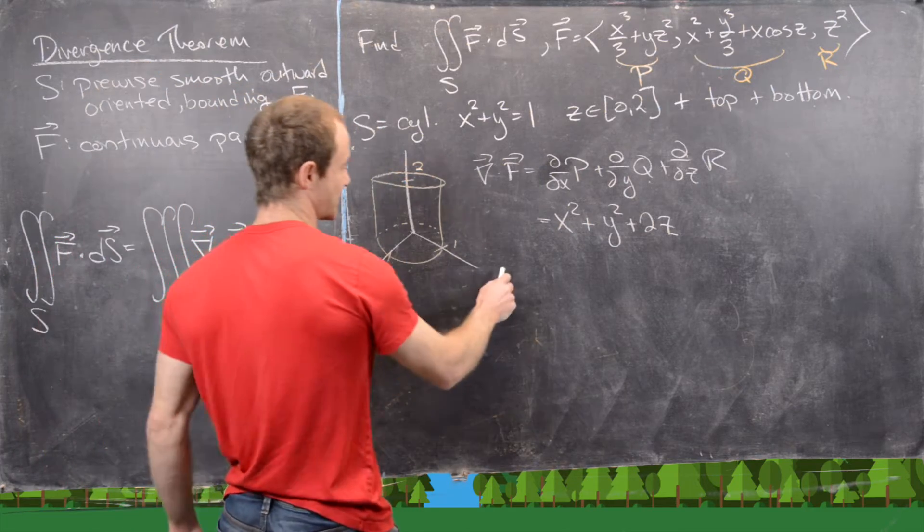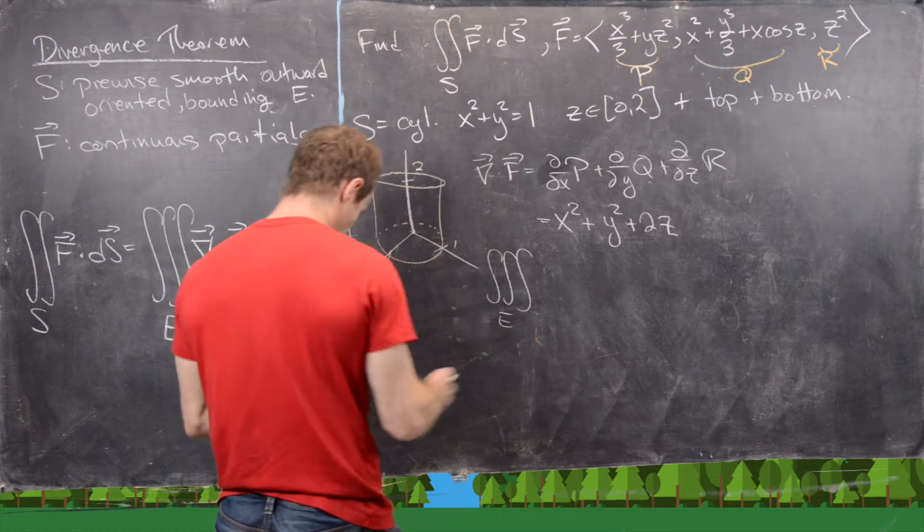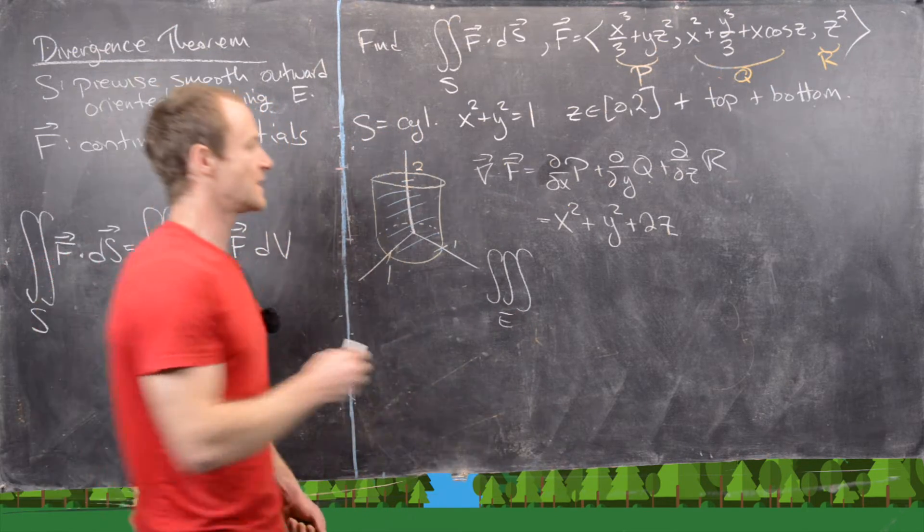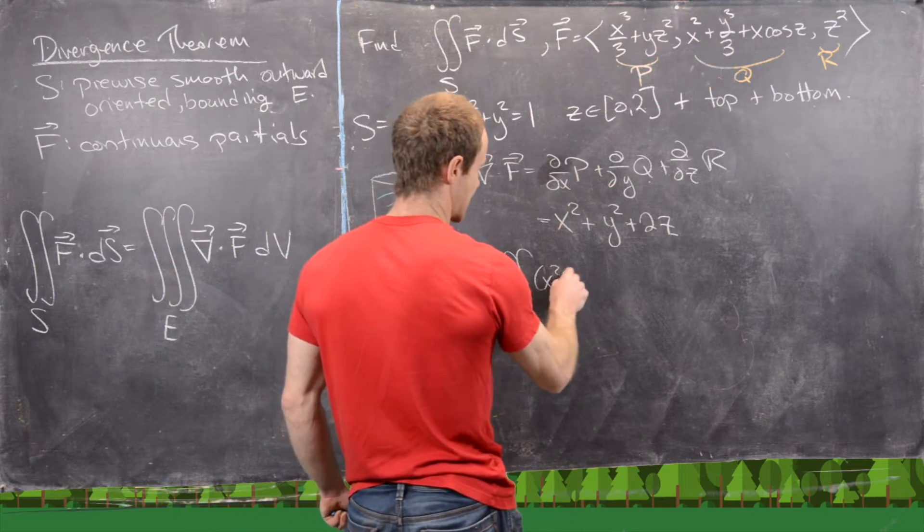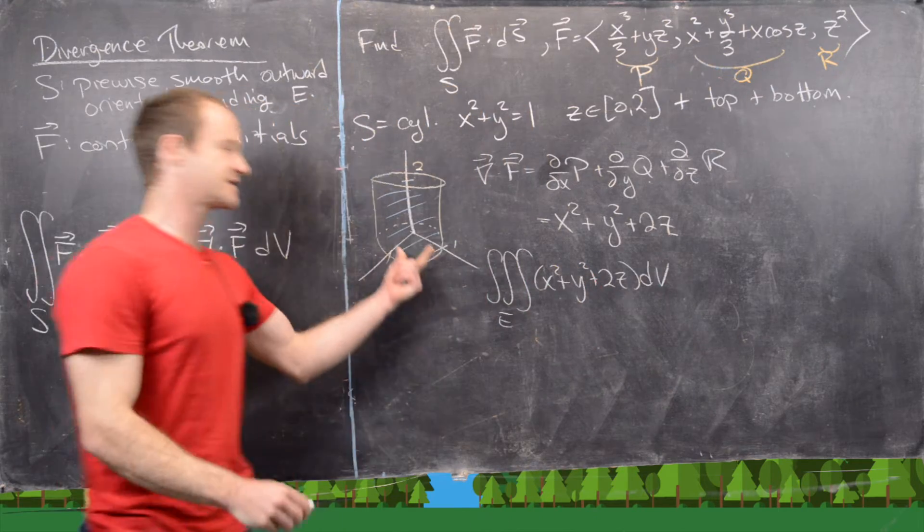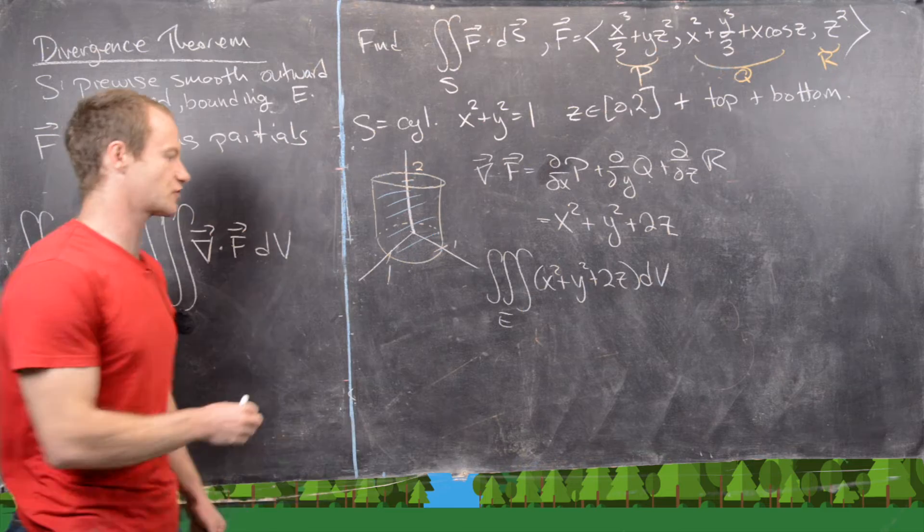So now we need to take this triple integral. So we'll have the triple integral over e, where e is now the solid region of this cylinder of this function right here. So we've got x squared plus y squared plus 2z dv. Now, since this is a cylinder, this is just screaming out for us to use cylindrical coordinates.